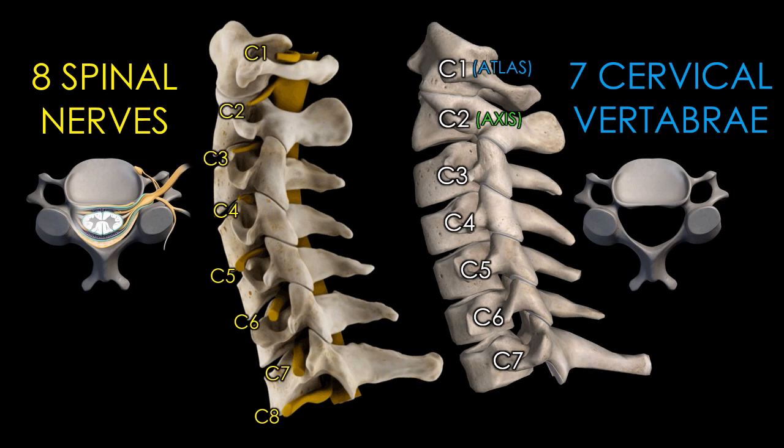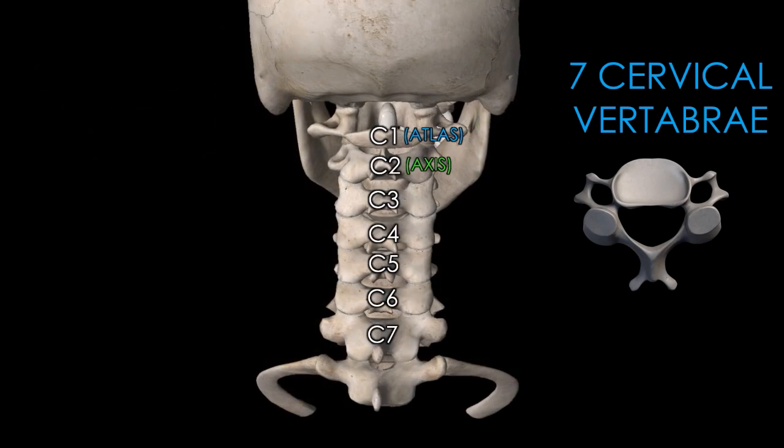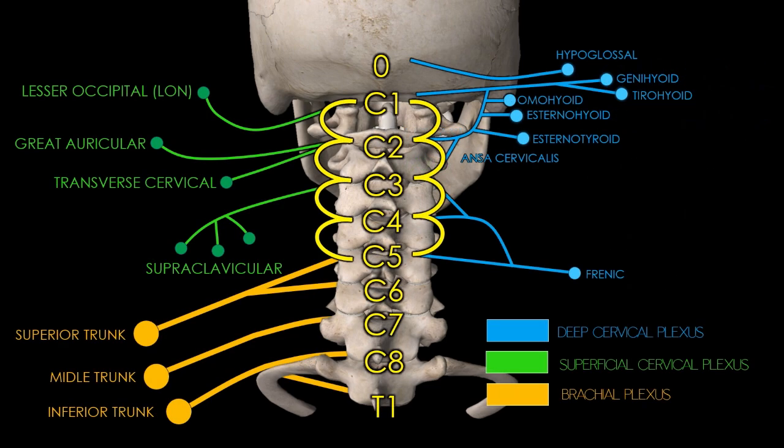From the thoracic level downward, spinal nerves exit below their respective vertebrae, following the standard segmental arrangement. This anatomical configuration holds important clinical implications, as it underpins the organization of cervical dermatomes and myotomes, and is essential for accurate neurological localization in the context of radiculopathy, spinal trauma, and image-guided interventions, such as selective nerve root blocks or regional anesthesia techniques.